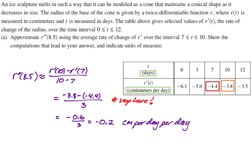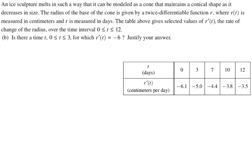Let's look at the next one. Is there a time t between 0 and 3 for which r prime of t is equal to negative 6? We have to justify our answer. When I see this, I usually think this is either going to be MVT or IVT. Since the table that I have is for r prime of t, I'm thinking that it's going to be IVT. If the table I had was for r of t, I would think MVT because MVT moves down a level and IVT kind of stays on the same level. To use IVT, I need r prime to be continuous.